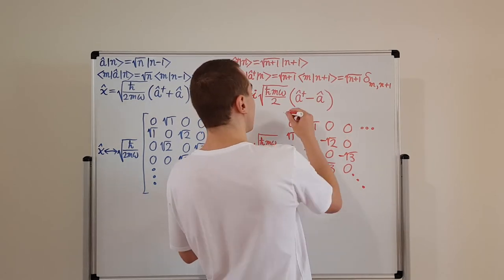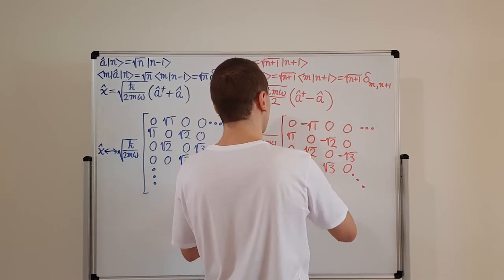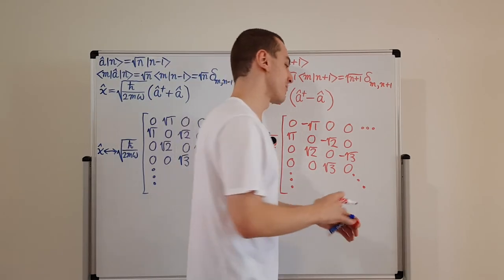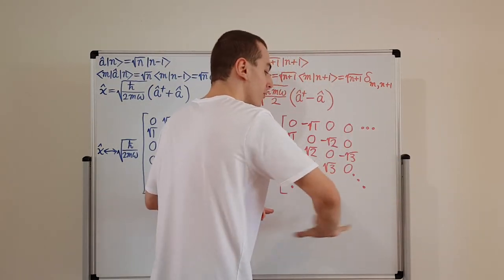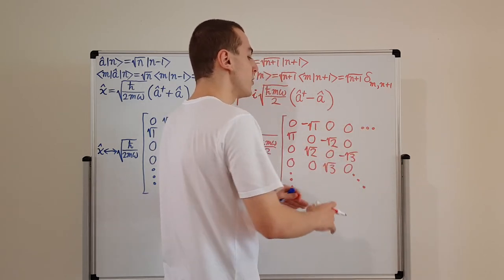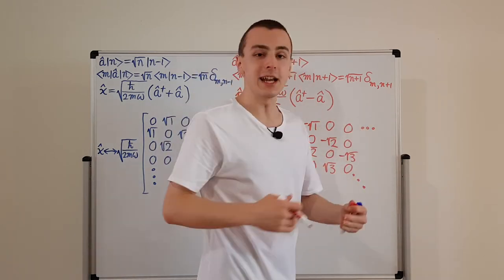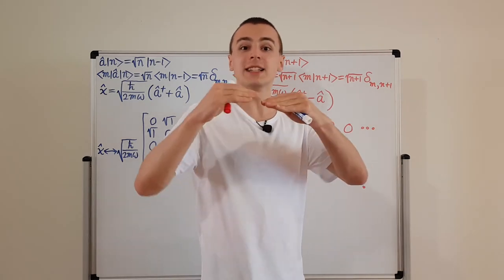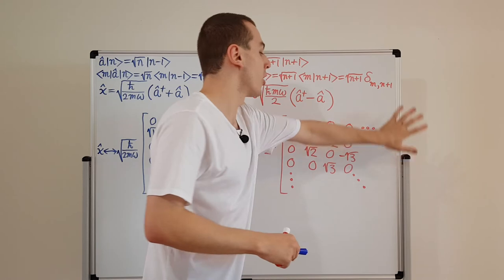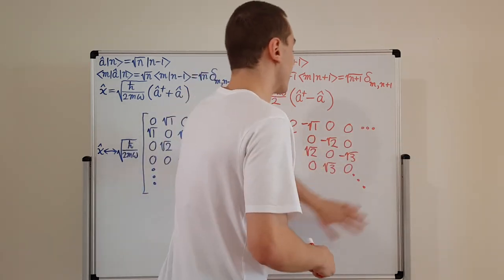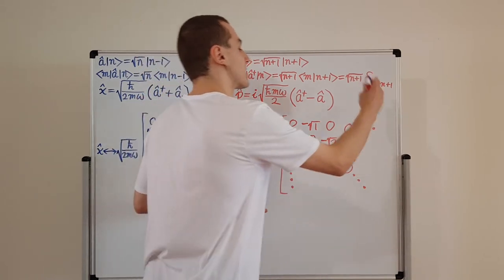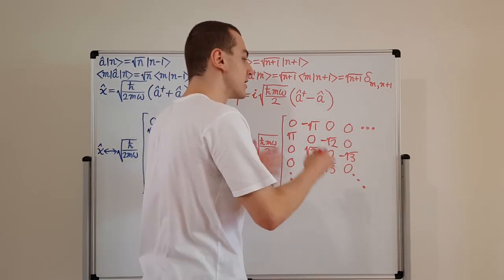In practice, if you're doing this computationally you would prefer to deal with a finite matrix. You can truncate — chop off the higher rows and columns. If your system has only a few excitations above the ground state, you don't need to worry about the large values. Truncating the matrix is what's commonly done in computational work.